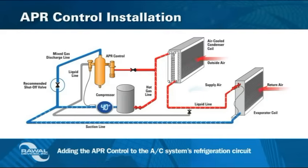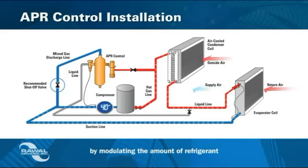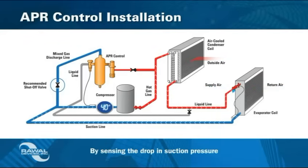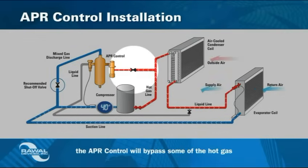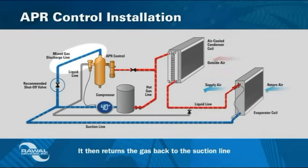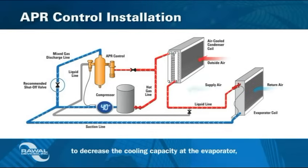Adding the APR Control to the AC system's refrigeration circuit will extend run time and moisture removal by modulating the amount of refrigerant that is sent to the evaporator coil. By sensing the drop in suction pressure caused by decreasing return air temperature, the APR Control will bypass some of the hot gas through a de-superheat chamber. It then returns the gas back to the suction line to decrease the cooling capacity at the evaporator, thus extending the run time.